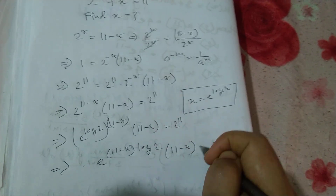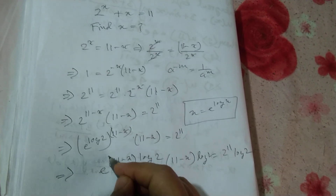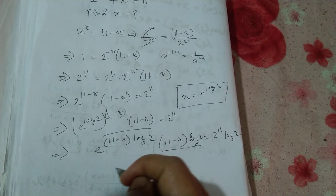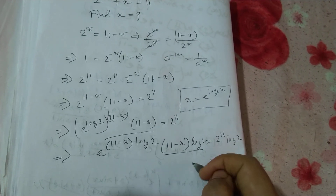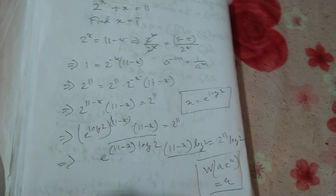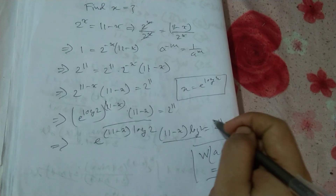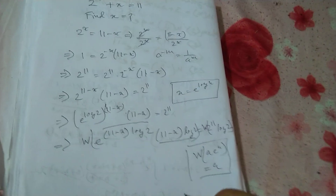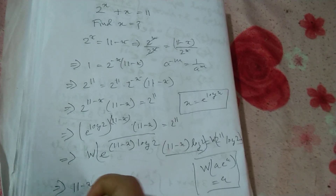Now multiplying log 2 on both sides. We recognize the form w times e to the power w equals a, which is the Lambert W equation. Applying the Lambert W equation to both sides, we can write: (11 minus x) log 2 equals W of (2 to the power 11 times log 2).